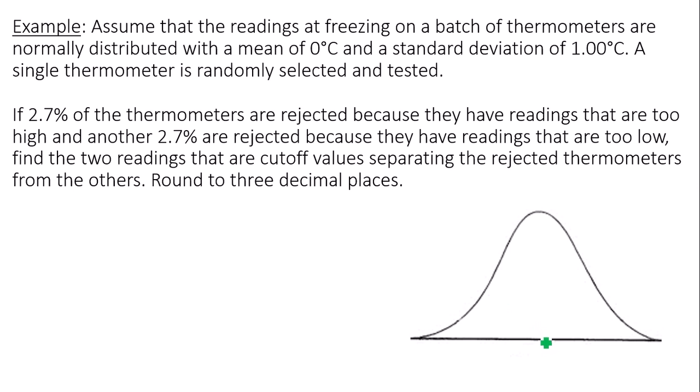So in my bell curve, I have a mean of 0. The thermometers that are rejected will be your lowest recorded temperatures, whose area to the left is 2.7%, and area to the right is 2.7%.